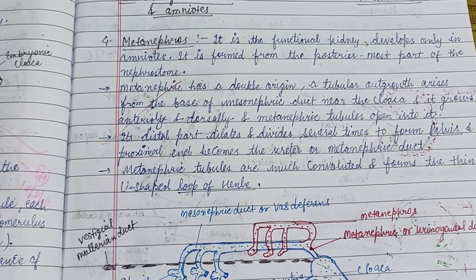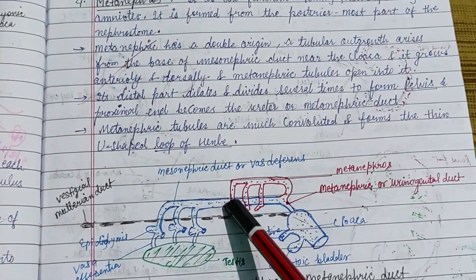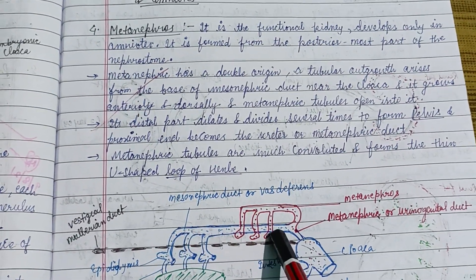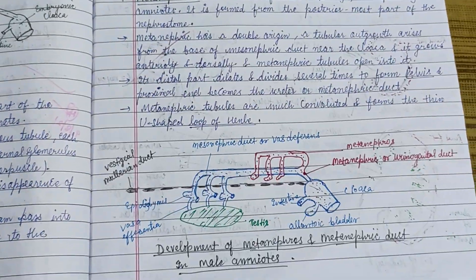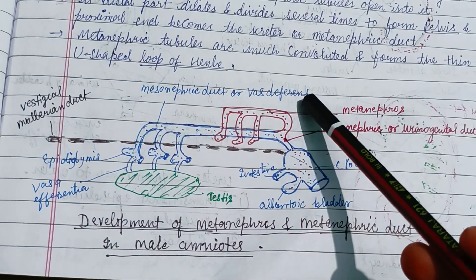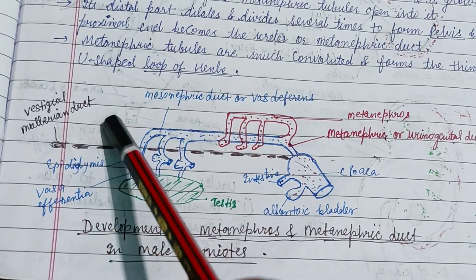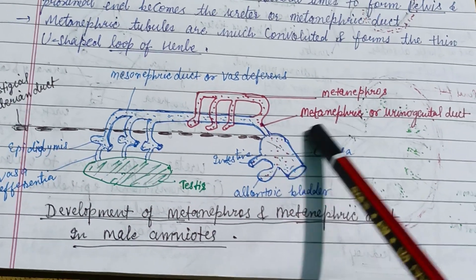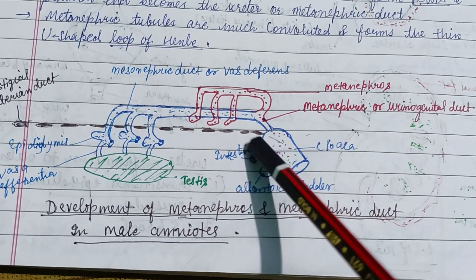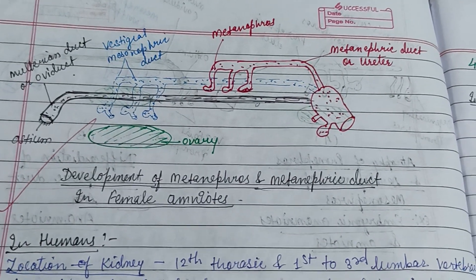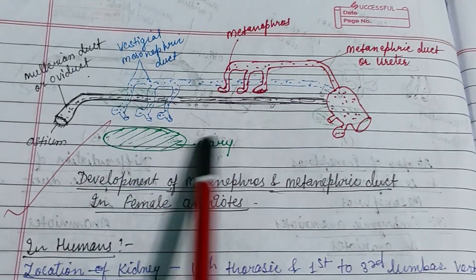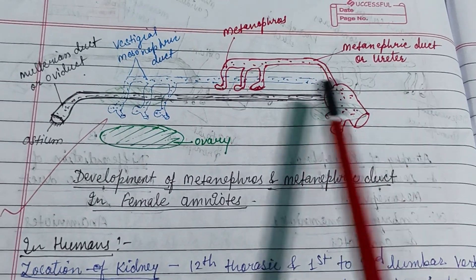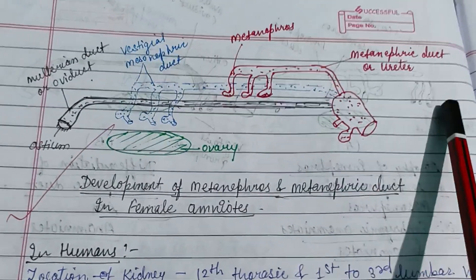Metanephros is the functional kidney that develops only in amniotes, formed from the posterior-most part of the nephrostome. The posterior nephric tubules are modified to form the metanephros, present in mammals. In males, the mesonephric duct forms the vas deferens, and there is a vestigial Müllerian duct. In females, the Müllerian duct is functional as the oviduct, and the mesonephric duct is vestigial. The metanephros drains via the metanephric duct, or ureter.